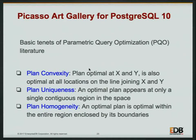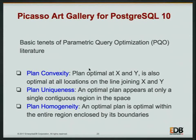Before going into the Art Gallery, we cover basic properties. Picasso expects correct plans to follow plan convexity: if a plan is optimal at some value of X and Y, then along the line joining those points, the same plan should be optimal. For example, if a sequence scan is best at some selectivity of X, the line joining to the Y value where sequence scan is also best should not have bitmap or index scan in between. The second property is plan uniqueness: if one plan appears at one selectivity region, it should be contiguous — the same plan should not appear, disappear, and then reappear. It should cover one homogeneous region.